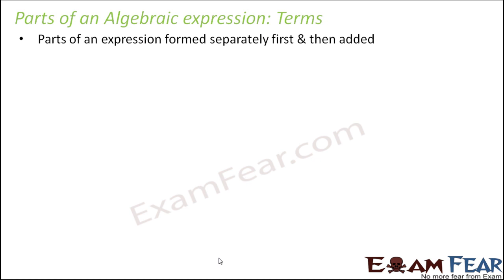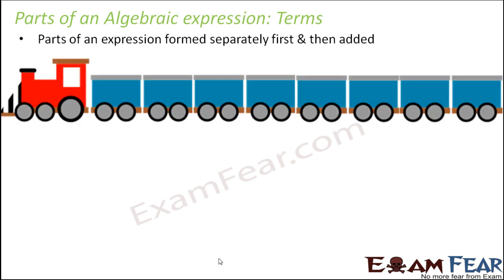These are parts of an expression which are formed separately first and then added. So it is like this train. So how is a train formed? A train is formed by adding small compartments together.